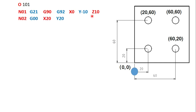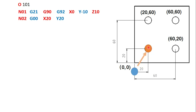N02 uses G00, which is rapid motion. The tool rapidly moves to position X20, Y20 — that is the location of the first hole. Since no Z coordinate is mentioned, it retains the last Z value of Z10, meaning the tool is 10mm above the workpiece at position X20, Y20.